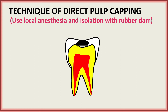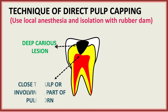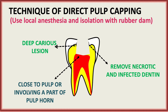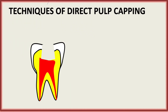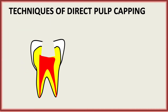Try to understand with the figures. First, use local anesthesia and isolation with rubber dam. We have a deep caries lesion close to the pulp or involving a part of the pulp horn. The first step is to remove the necrotic and infected dentine, which leads to formation of the cavity outline. As you can see in the figure, exposure occurs, and the cavity should be irrigated with saline, chloramine, or distilled water.